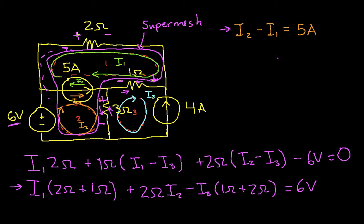Now, you'll notice with mesh 3, I've defined my mesh current I3 like this. And you'll notice that this 4 amp current source only has one mesh current going through it. So what this tells me directly is that I3 is negative 4 amps.